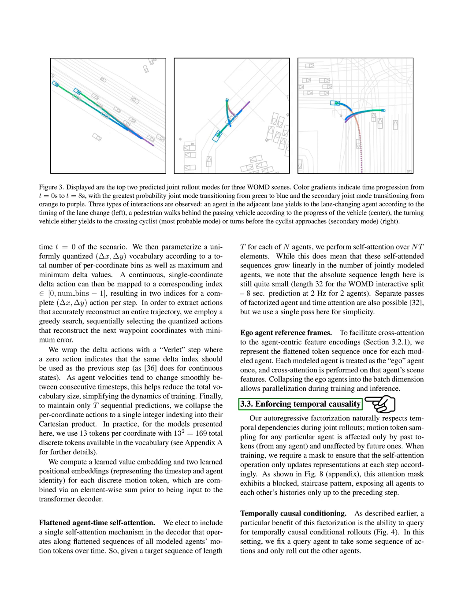Next, we'll talk about enforcing temporal causality. In our model, the sequence of actions taken by an agent is influenced only by past actions, not future ones. This is ensured by using a mask during training that only allows the model to update its representations based on past actions. This mask creates a pattern that allows each agent to be aware of the other's past actions up to the current step.